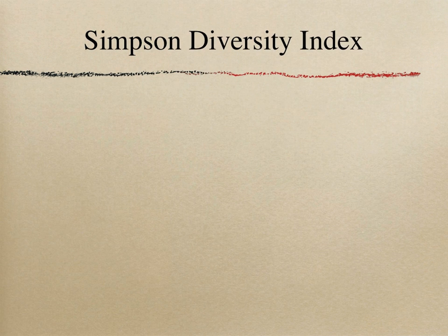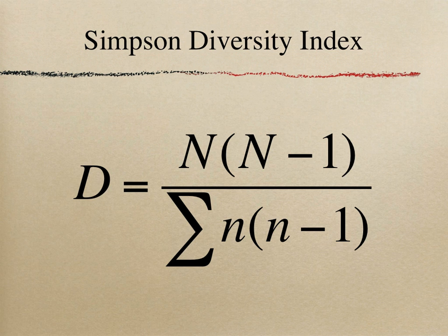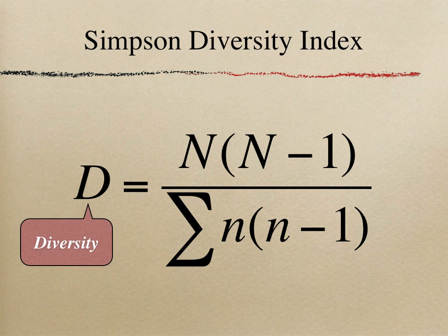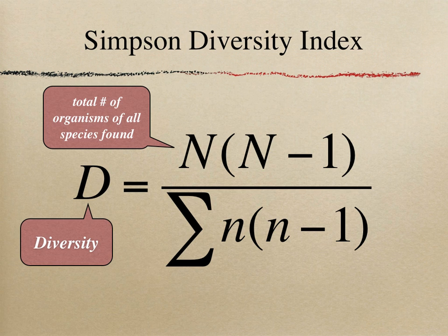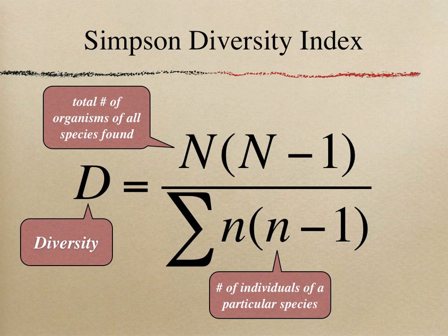Simpson Diversity Index has an equation to quantify the biodiversity of an ecosystem. As the letters indicate: D represents the biodiversity of species in an ecosystem, and this value ranges from 0 to 1 because the measure is represented as a decimal. Capital N means the total number of organisms of all species found. Small n is the number of individuals of a particular species. The Roman letter Σ (sigma) represents a sum.